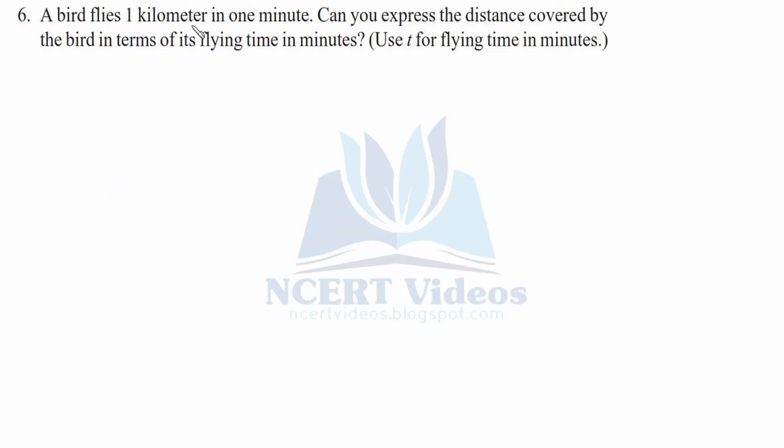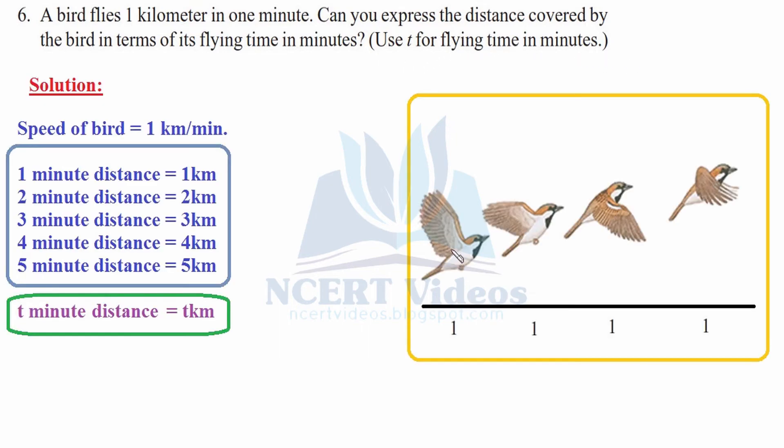Question 6: A bird flies 1 kilometer in 1 minute. Can you express the distance covered by the bird in terms of its flying time in minutes? Use T for flying time in minutes. This is a bird. It flies 1 kilometer in 1 minute, another 1 kilometer in another 1 minute. Similarly, another 1 kilometer in 1 minute and so on. For example, for 3 minutes, it will fly 3 kilometers. For 4 minutes, it will fly 4 kilometers.